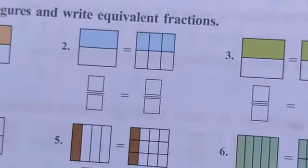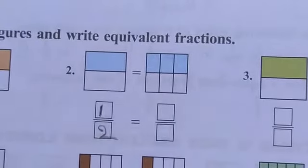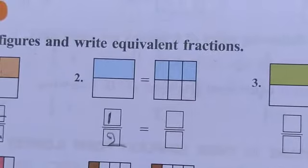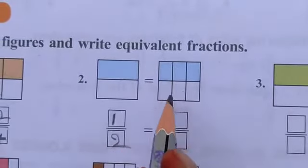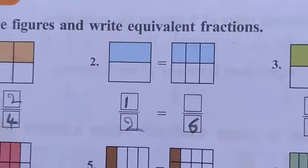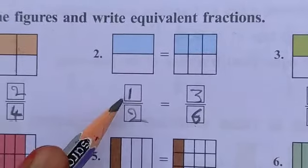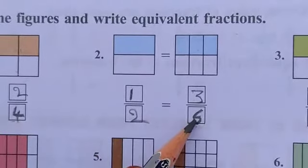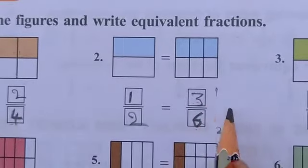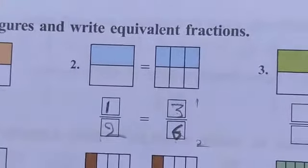In the second problem, the first figure is divided into two equal parts with one part shaded — giving 1 by 2. The second figure has six total parts with three parts shaded — giving 3 by 6. So 1 by 2 is equal to 3 by 6. These are equivalent fractions.